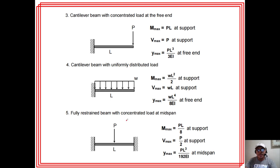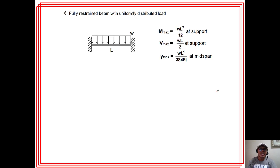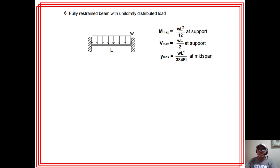Fully restrained beam (fixed at both ends) with concentrated load at mid-span — this is indeterminate. Fully restrained beam with uniformly distributed load: maximum moment at the support is WL²/12. Note that the moment at mid-span is WL²/24, which is different from the support moment.